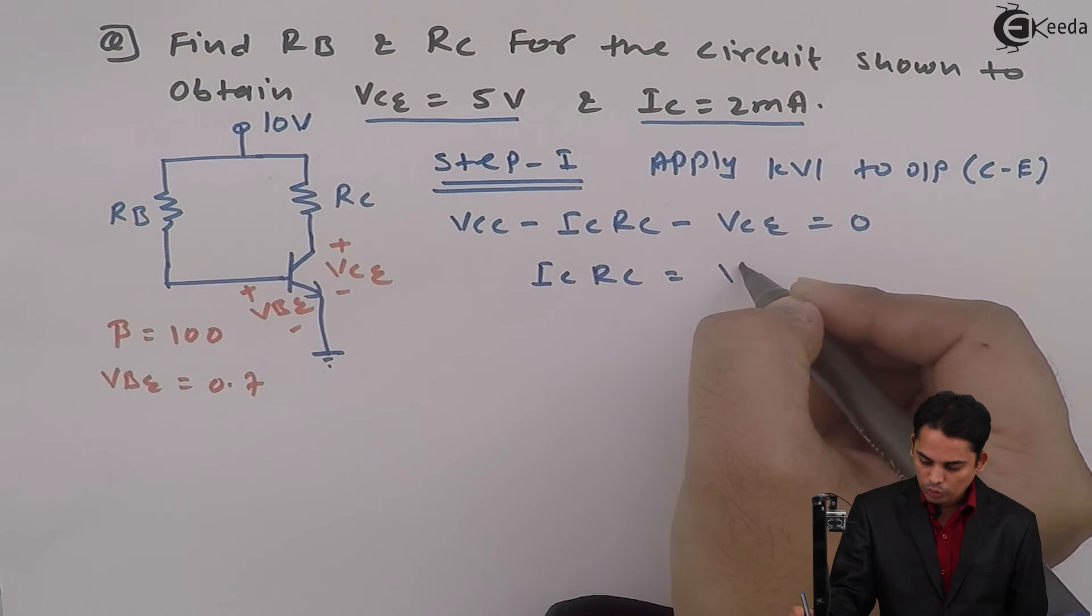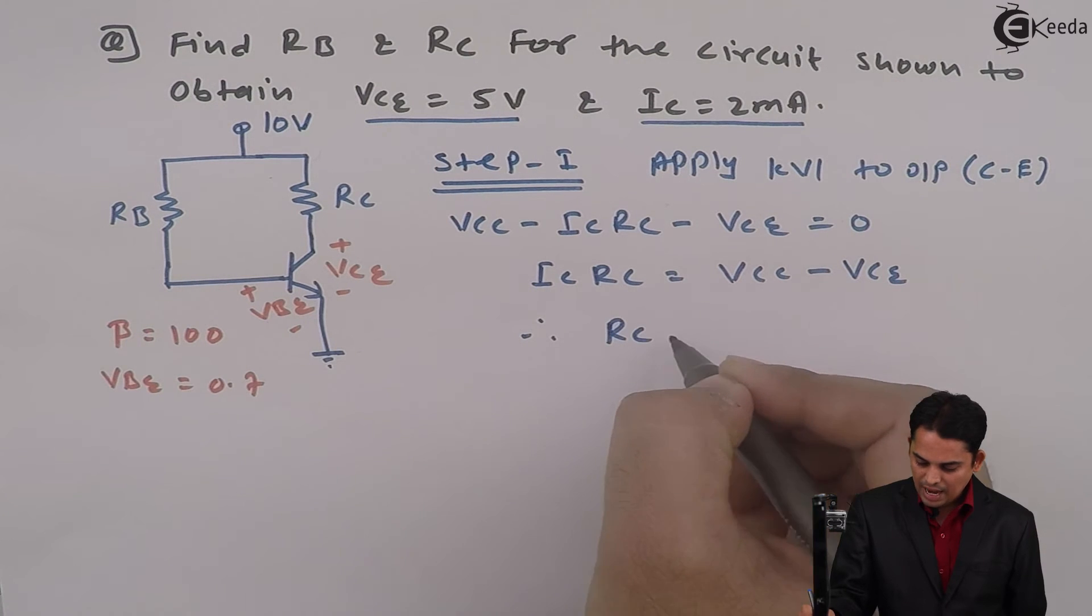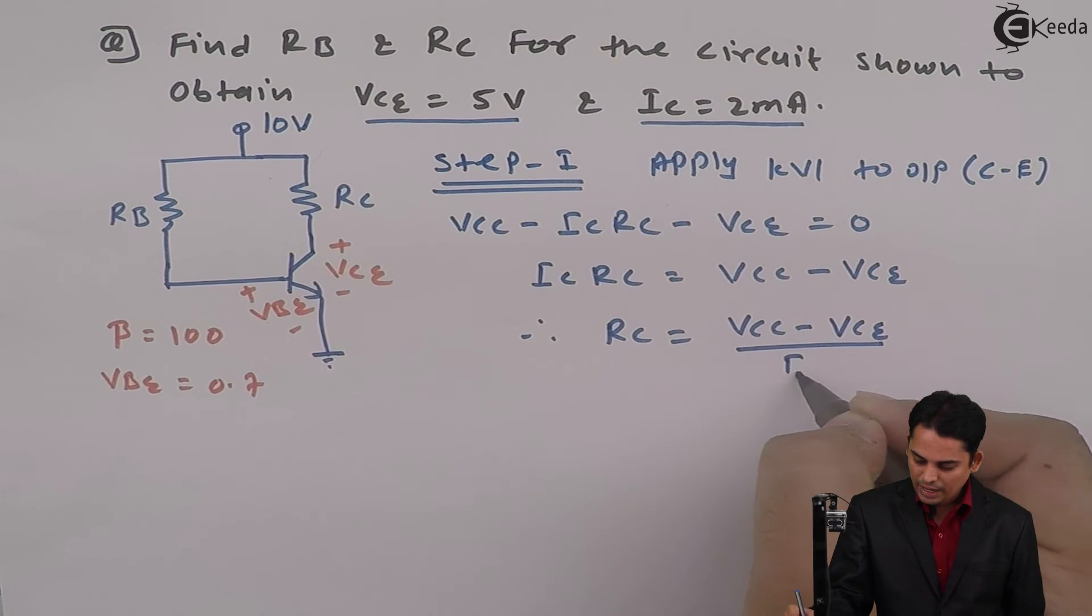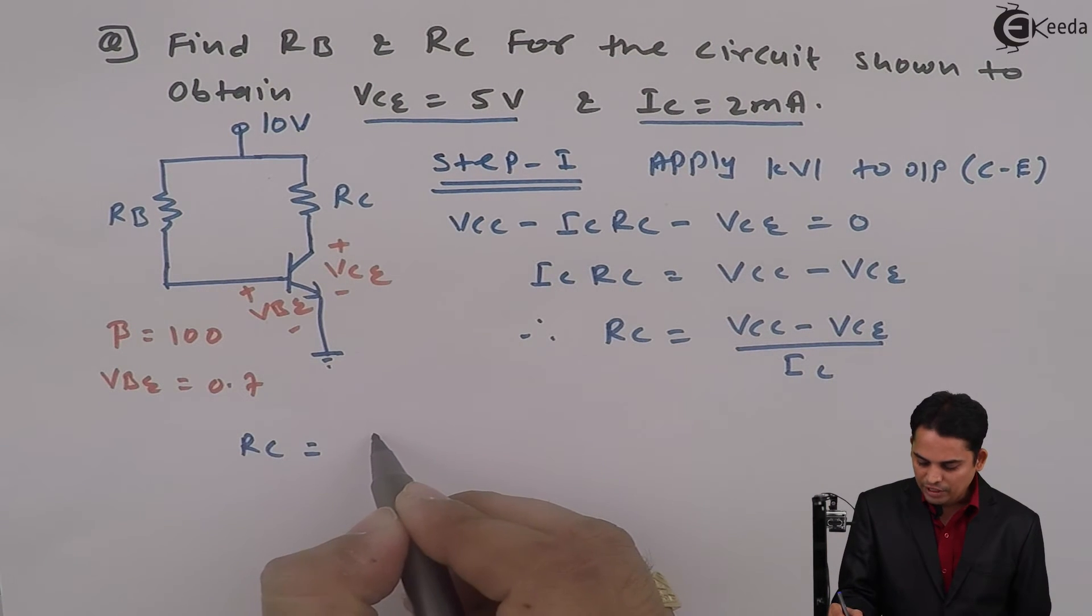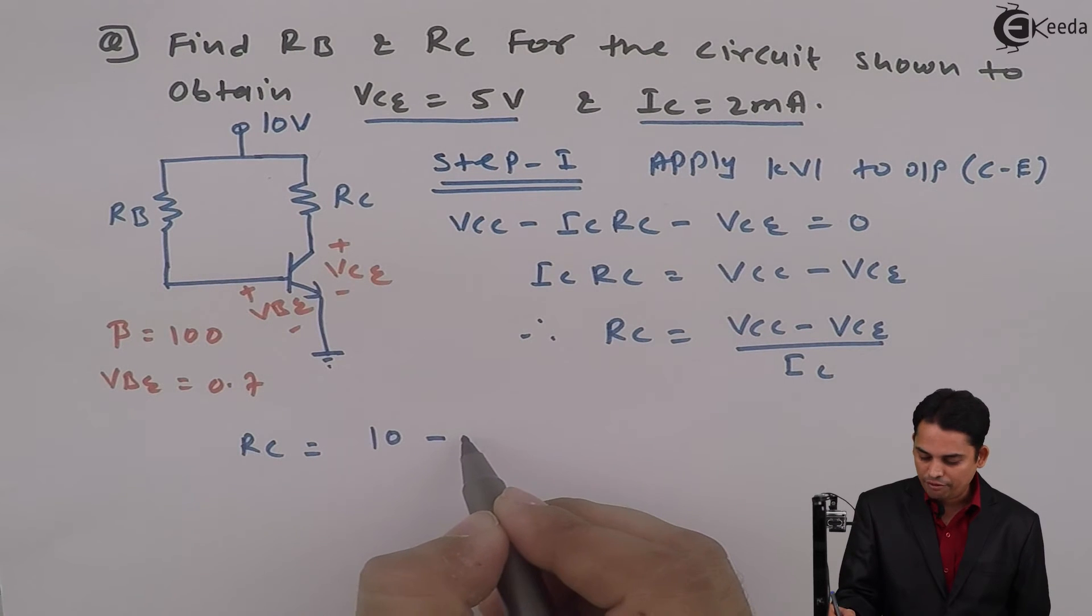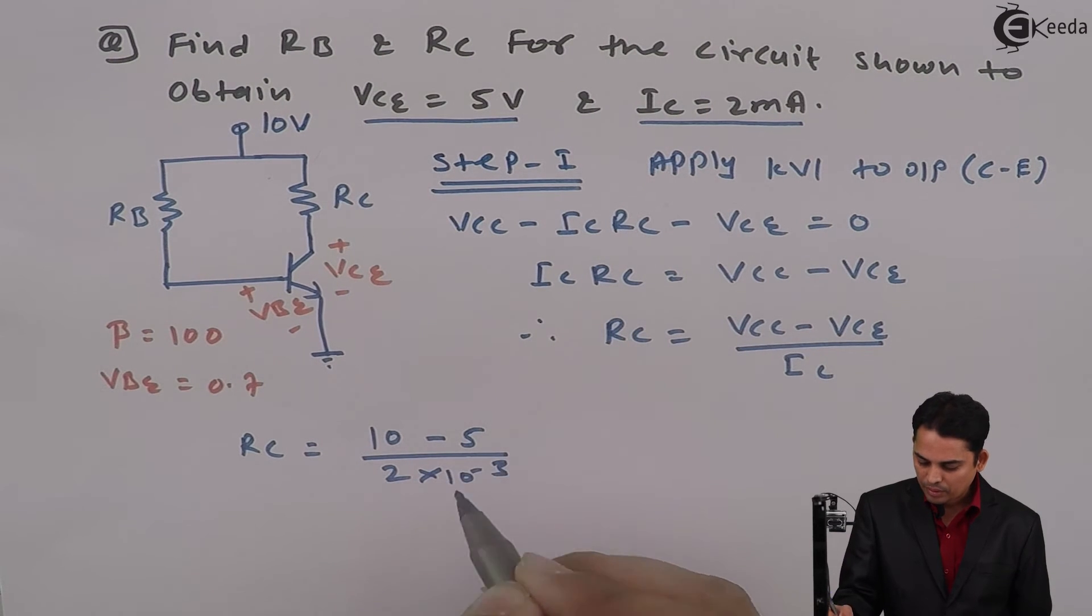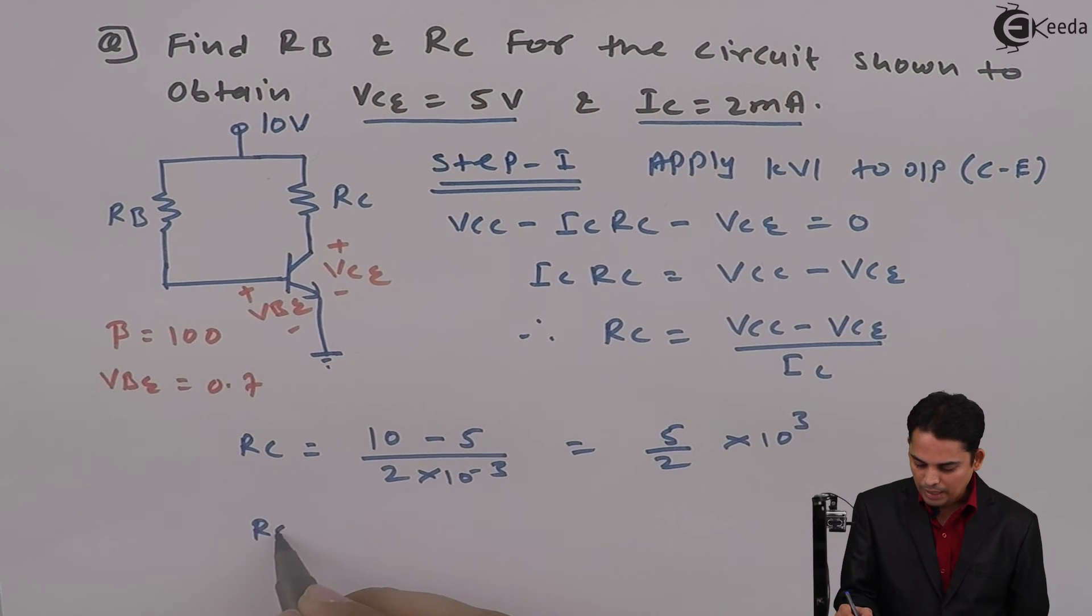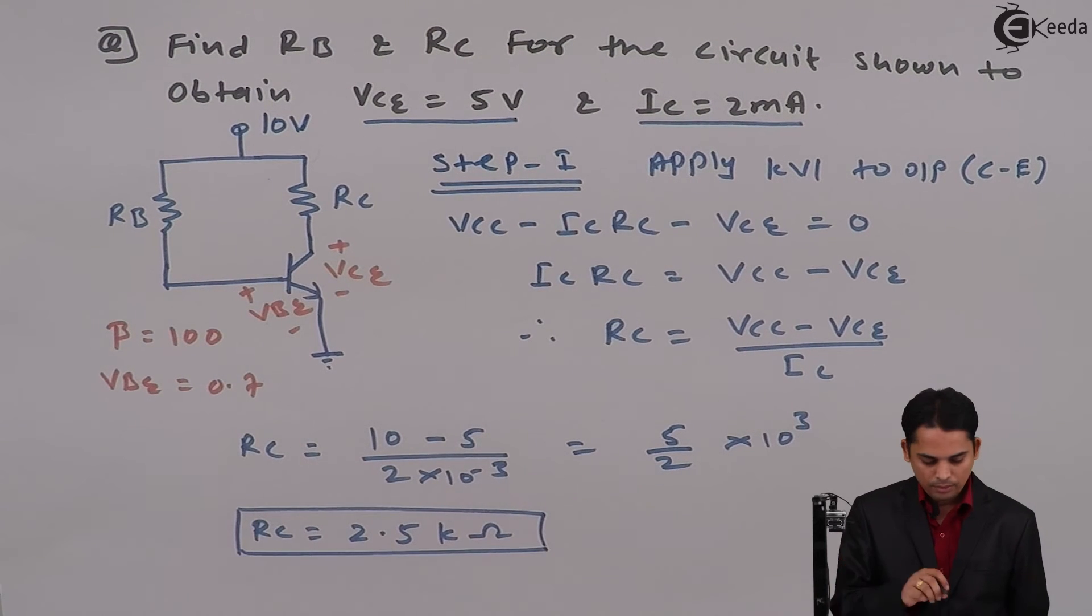So what we're going to do is we will take IC·RC to the other side. So the equation will become IC·RC = VCC - VCE. At the end, RC = (VCC - VCE) / IC. We will substitute the values: RC = (10 - 5) / 2×10⁻³, and hence the value is equal to 5 / (2×10⁻³). The value will become RC = 2.5 kΩ.